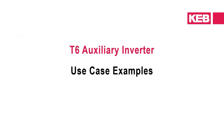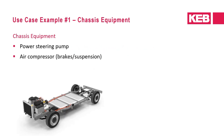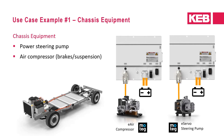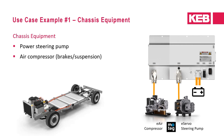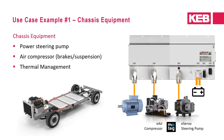With an overview of the T6 auxiliary inverter system in mind, I'd like to provide some use case examples, starting with the typical application. The most common applications start with electrifying chassis auxiliaries, including the power steering pump and air compressor for brakes and suspension. These components can be electrified each with their own inverter, or more preferably combined into a two-in-one system and independently controlled. The chassis equipment may also include thermal management such as a coolant pump or heat exchanger, extending the system to a three-in-one configuration.